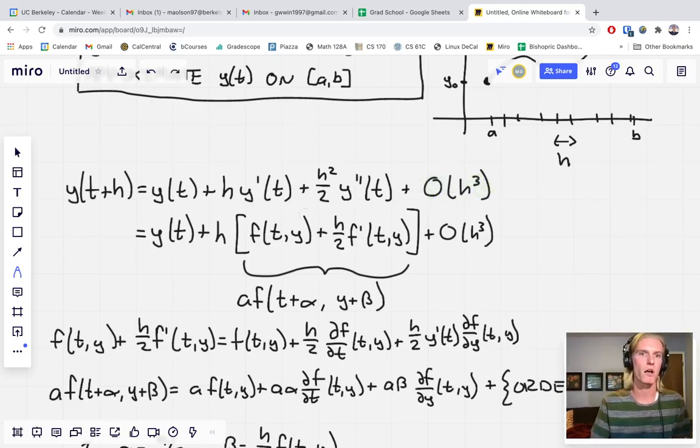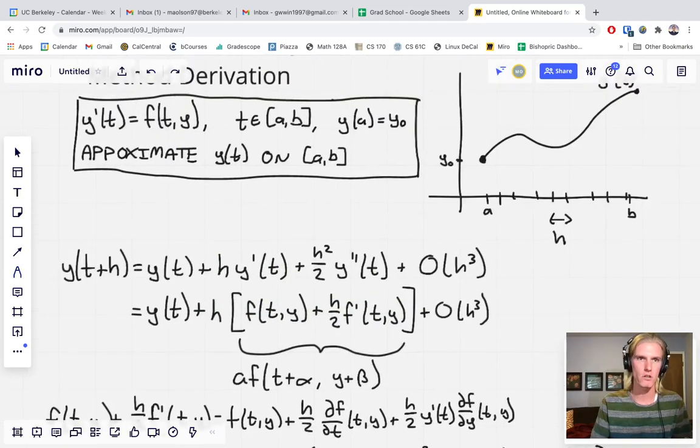Now we're going to do a little bit of rewriting. We are going to pop an h out of these second terms here. So we get h standing out front and we end up with this in the middle. Notice here that I'm using this definition, f is the same as y prime, to put this here,